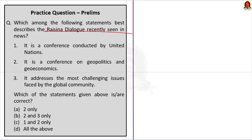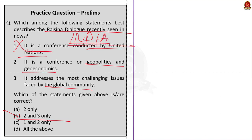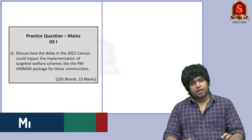Question four: Which among the following statements best describes the Raisina Dialogue, recently seen in the news? (1) It is a conference conducted by the United Nations; (2) It is a conference on geopolitics and geoeconomics; (3) It addresses the most challenging issues faced by the global community. The answer is Option B — statements two and three only. Statement one is incorrect: it is India's premier conference conducted by the Observer Research Foundation in partnership with the Ministry of External Affairs, not the United Nations. That's all for today's MCQ practice.